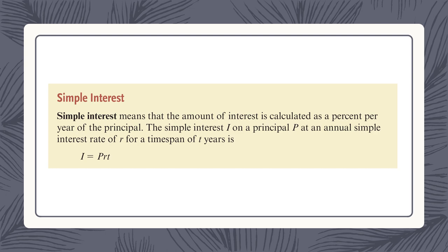The simple interest I on a principal P at an annual simple interest rate R for a time span of T years is: I equals P times R times T. I is the interest — the amount of money the investor is profiting. P is the original amount of money. R is the interest rate and T is the term of the loan.